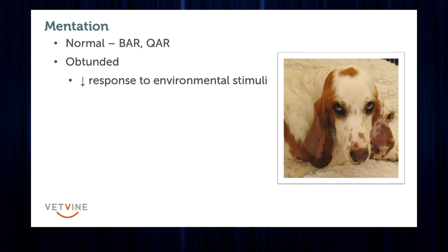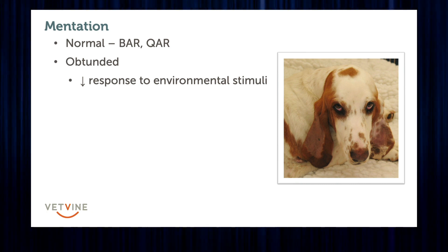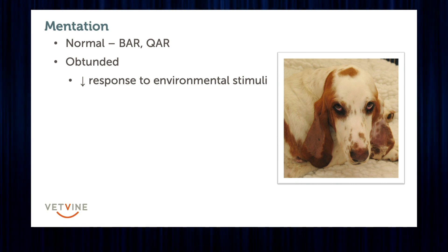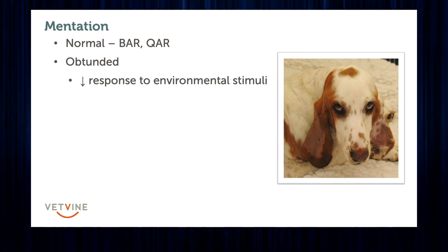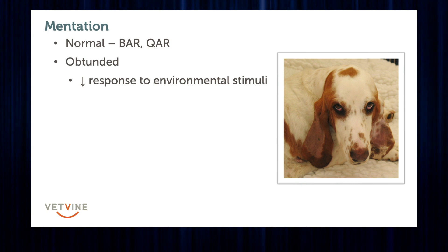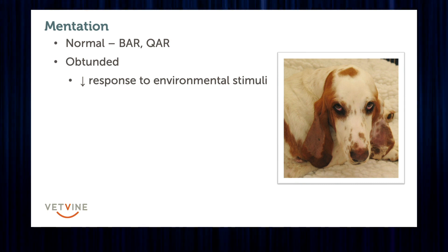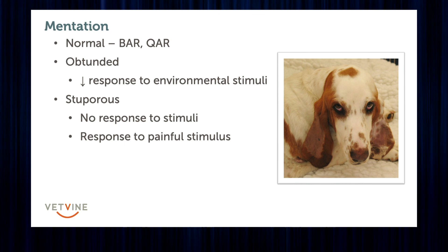The next phase is an obtunded patient — that's a patient that is awake and alert and looking around, but their response to environmental stimuli is dulled. Usually within obtundation I'll grade it as mild, moderate, or severe, and that can be somewhat subjective depending on who's evaluating.